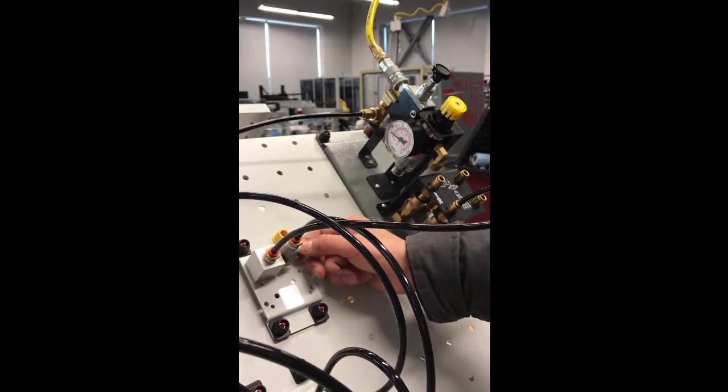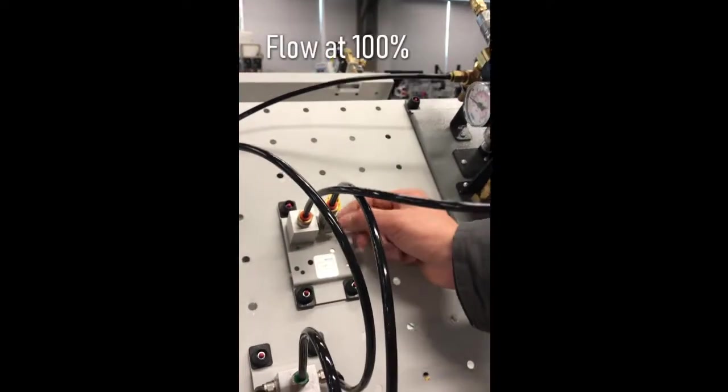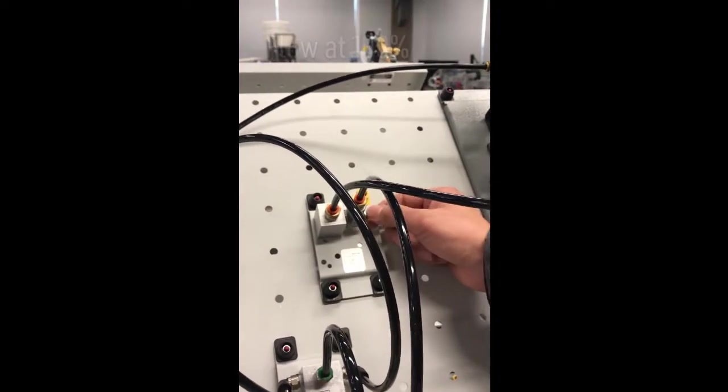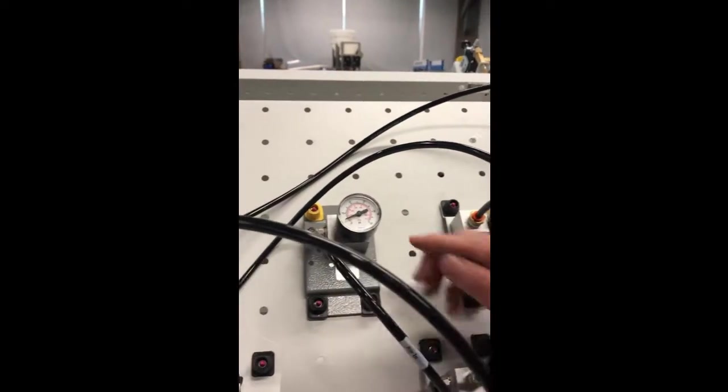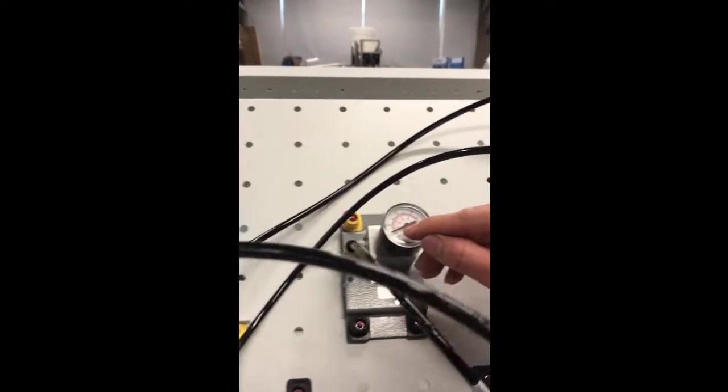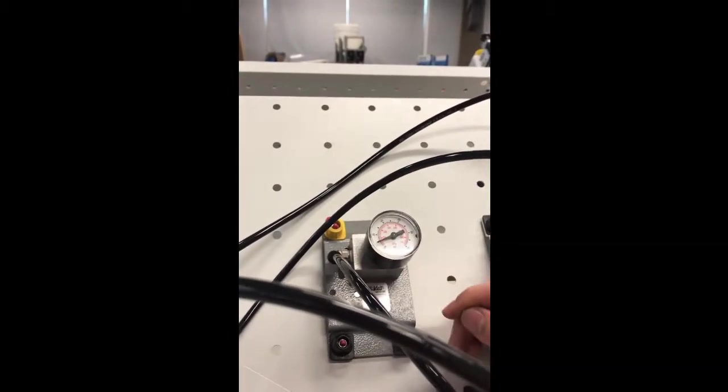We're gonna raise the flow to 100%, and we should see our flow gauge raise up. So right now it's at 100%. Our psi on our tool gauge also rose up very slightly, about 5 psi.